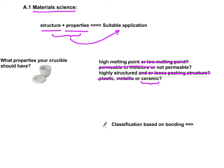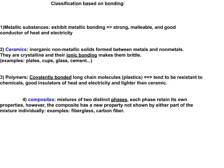Now let's go after classification based on bonding — these are our choices. You have metallic substances, and you should know what properties they have. They have metallic bonding, therefore they are strong, malleable, and good conductors of heat and electricity.